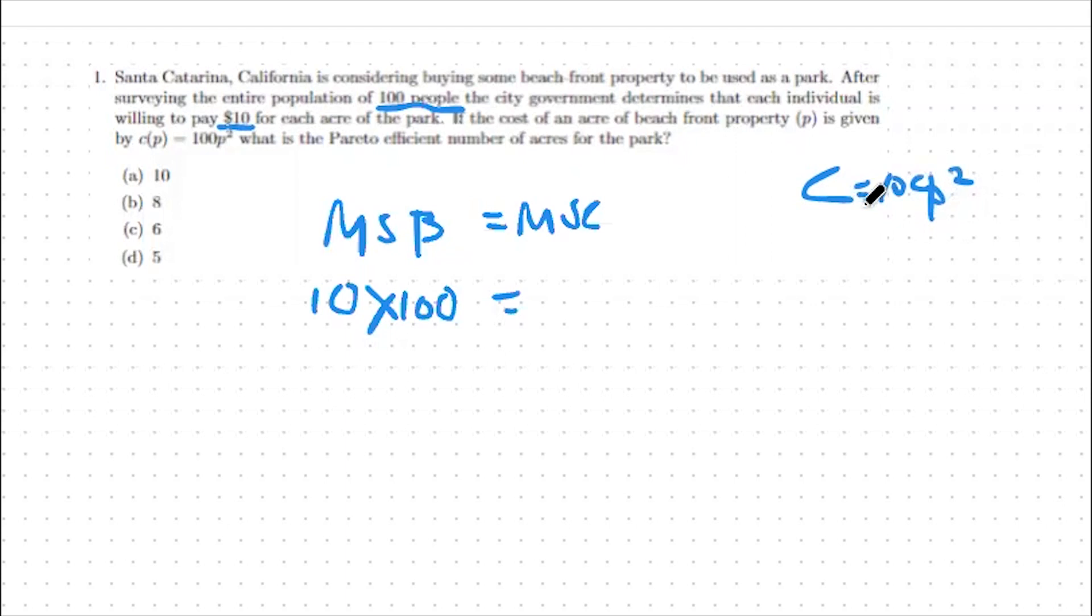And what we're going to do is take the derivative of this with respect to P to get 200P. That will be our derivative or our marginal social cost.